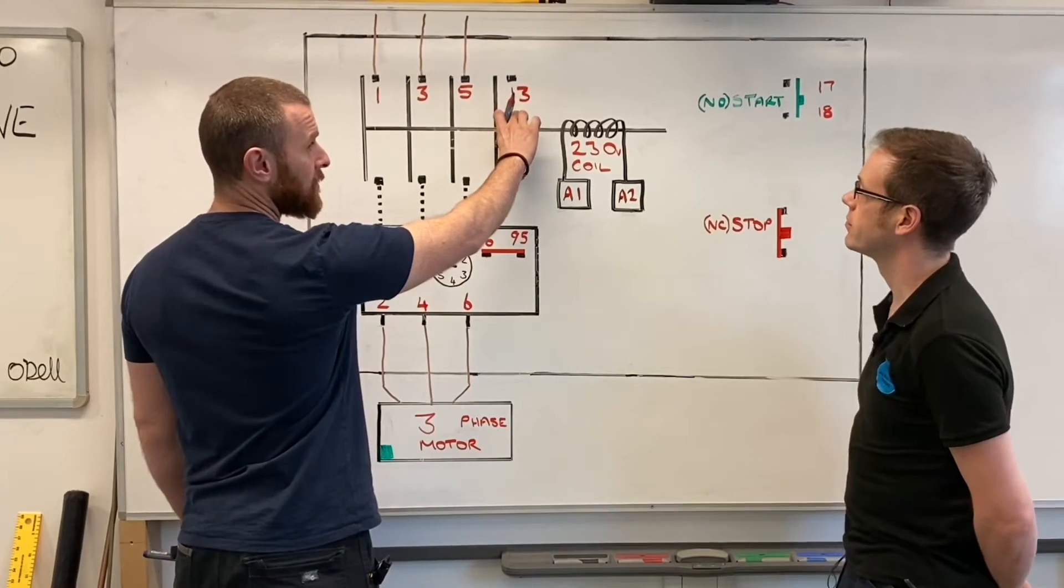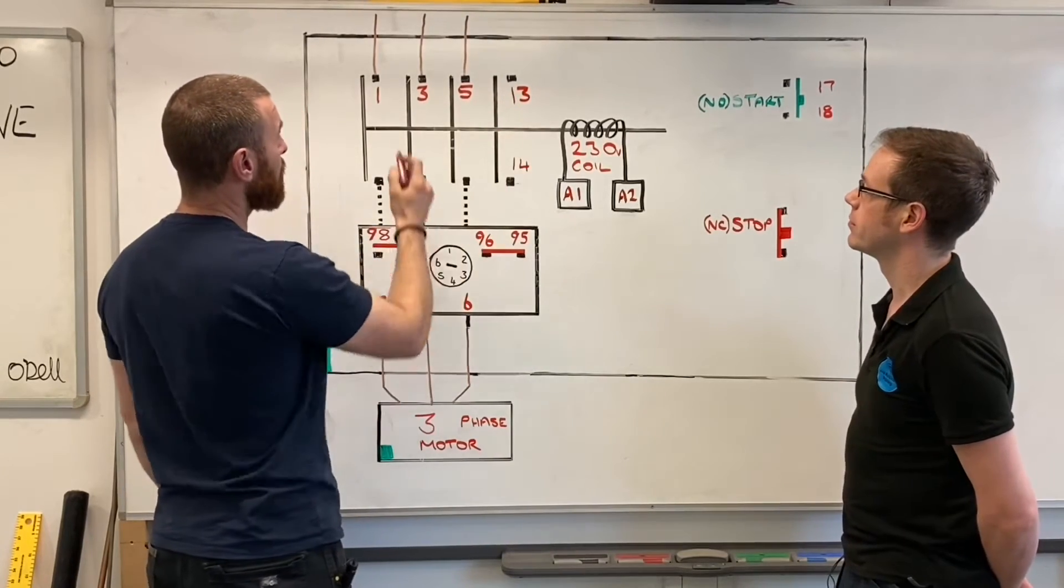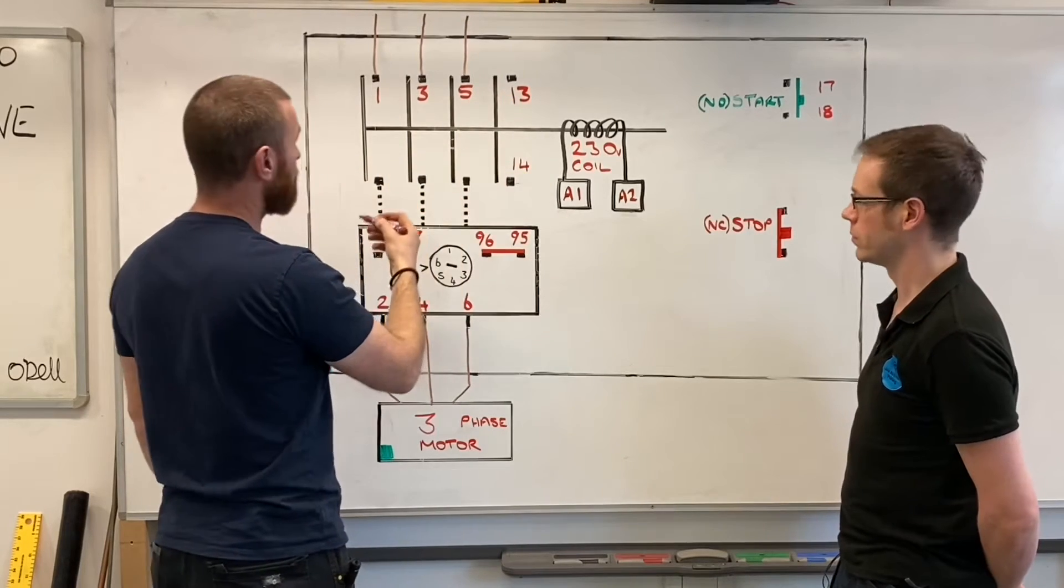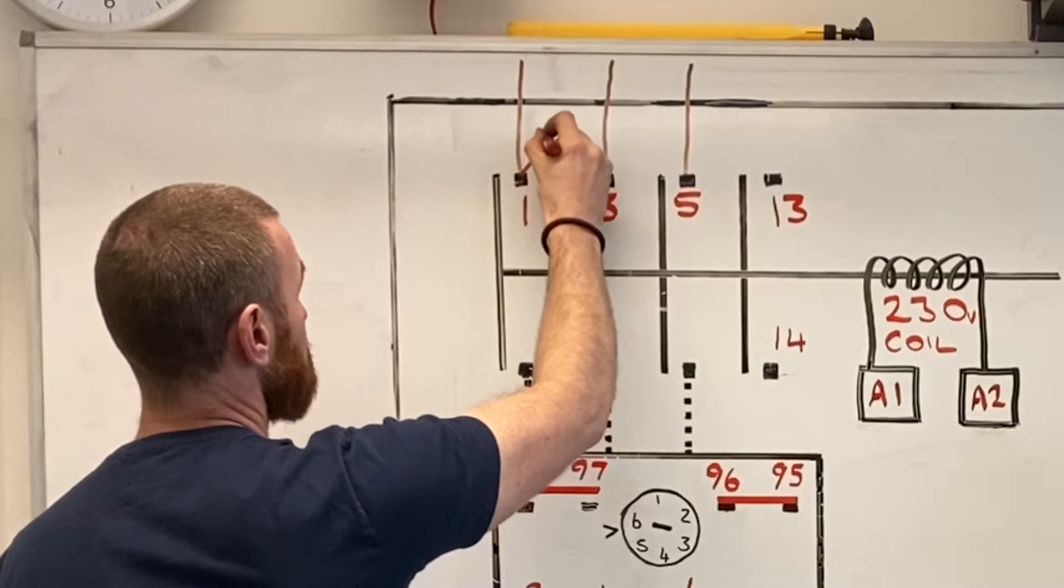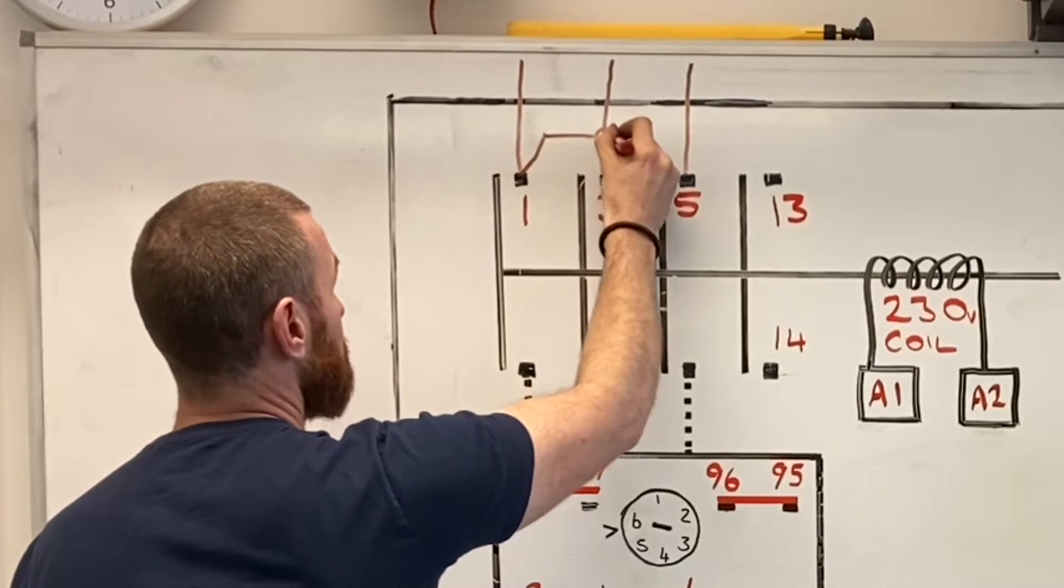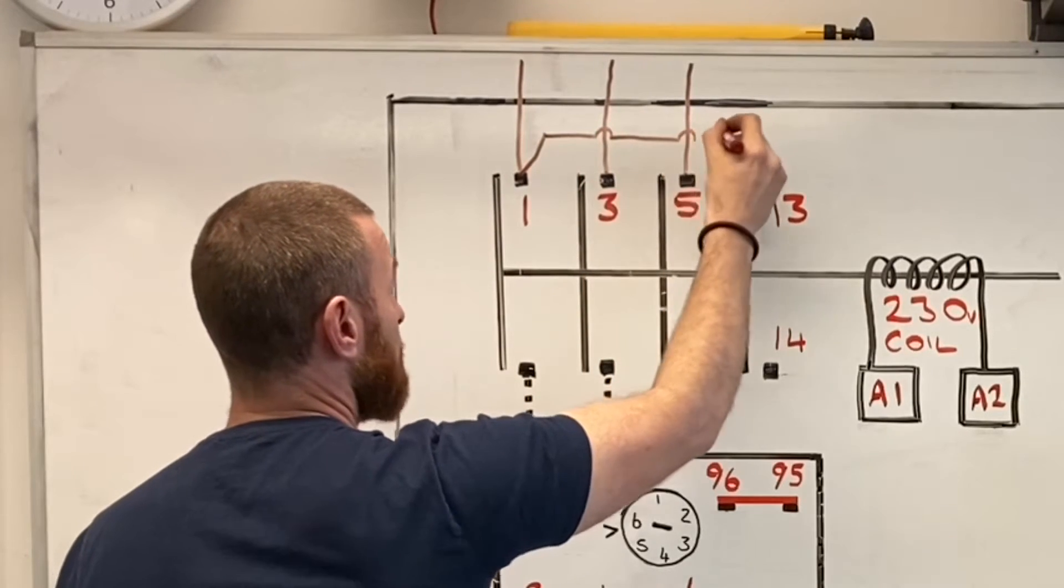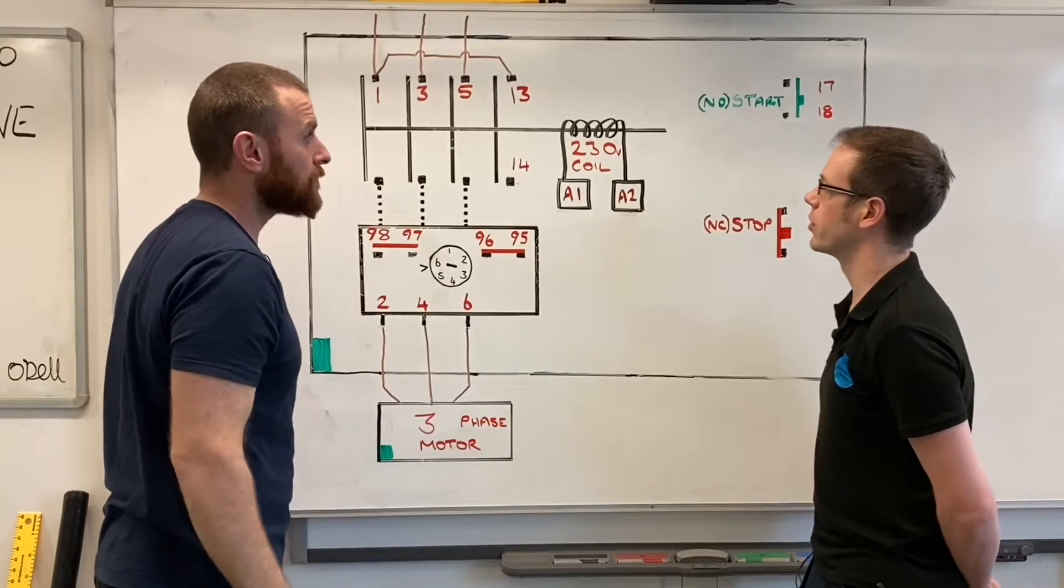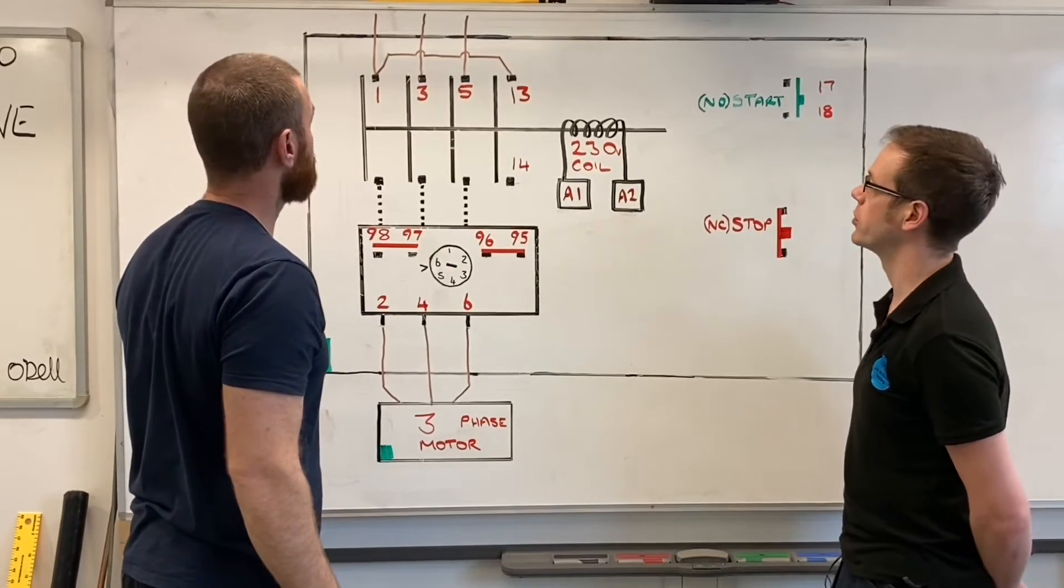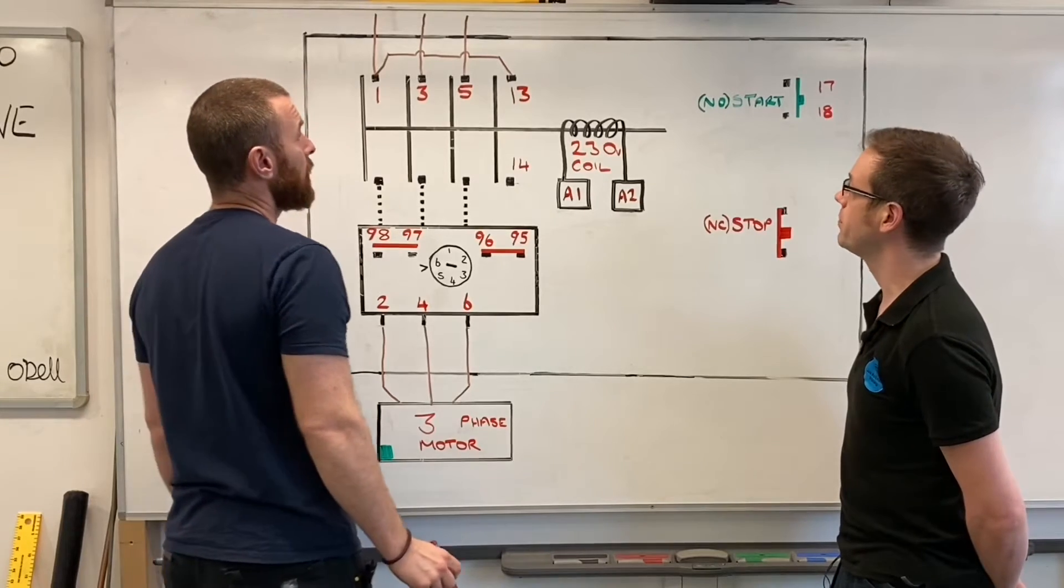We've still got our retaining contacts, numbers 13 and 14, and we need to take a phase to one of those. I always choose to take it from number one. That's fairly standard practice, I think. It's a microscopic load here, so it's not going to cause any issues.